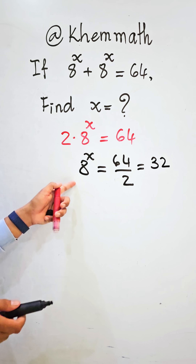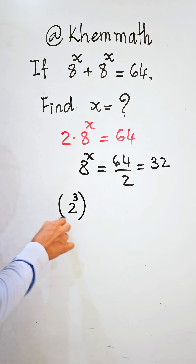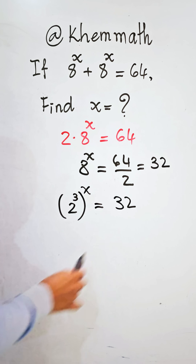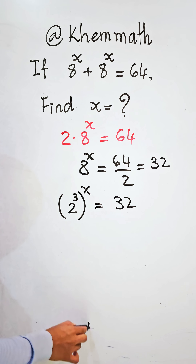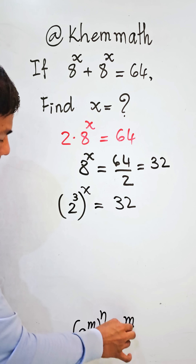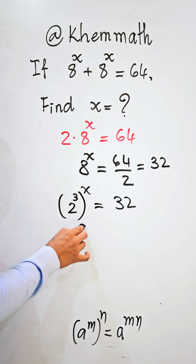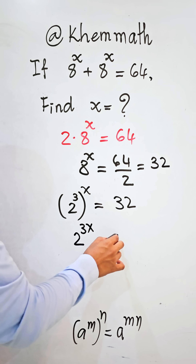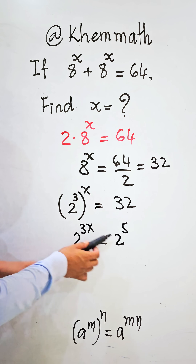Now, b can be written as 2 to the power 3, so we get 2 power 3, all to the power 8, equals 32. Using the formula a power m to the power n equals a power m times n, we get 2 power 3·8 equals 32, which equals 2 power 5.